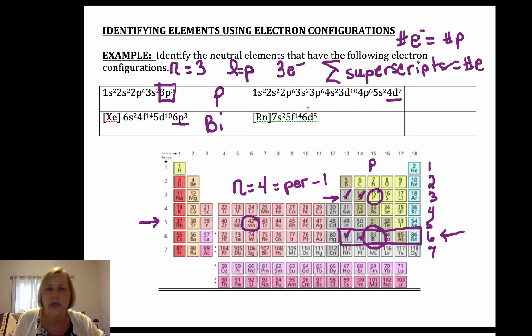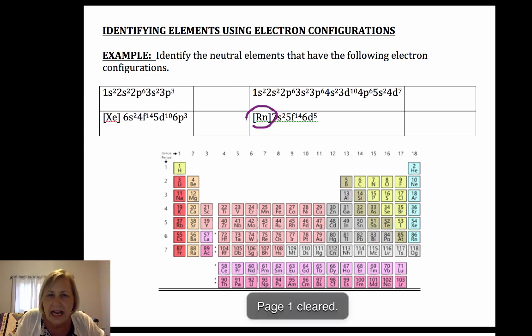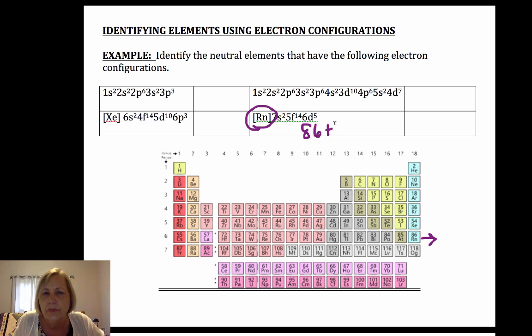And then one last one. This is 6d5 and so I must be in the seventh period. And notice this gives me radon. So I have radon. So I know that I am beyond radon. So you could do radon, which is 86 plus 2 plus 14 plus 5. So you could count the electrons that way as well.